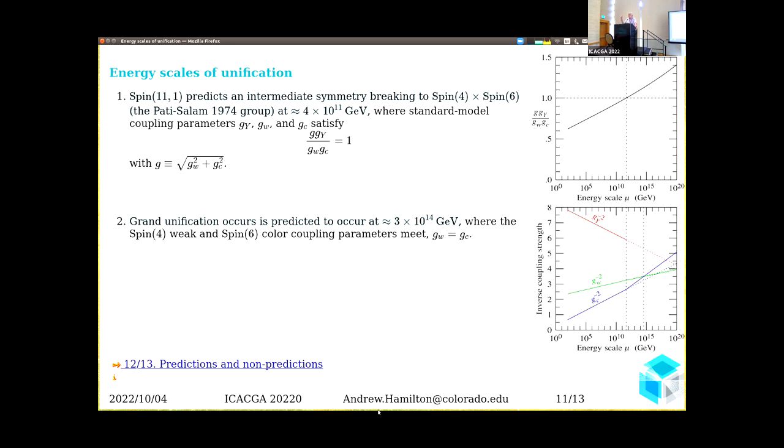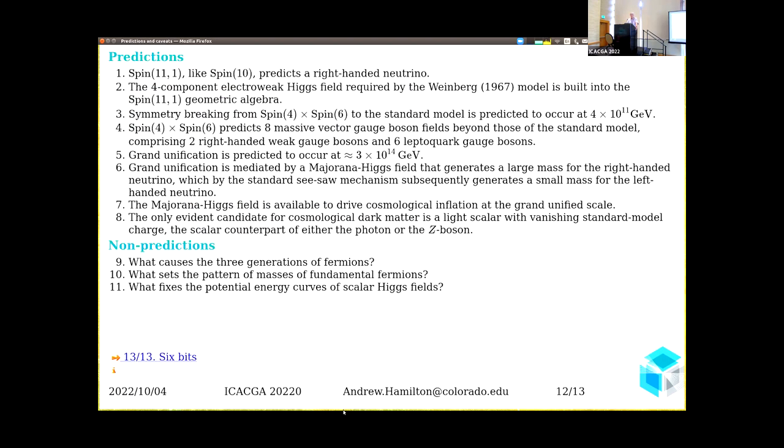Here's a list of predictions. I'll mention the two at the end. Grand unification is mediated by a Majorana mass Higgs field. The Majorana mass Higgs field is available to drive cosmological inflation at the grand unified scale, and that's a non-trivial statement: a single field which is consistent with the data from Planck. The only evidence for a dark matter particle is a light scalar with vanishing standard model charge, so the scalar companion of a photon or Z boson.